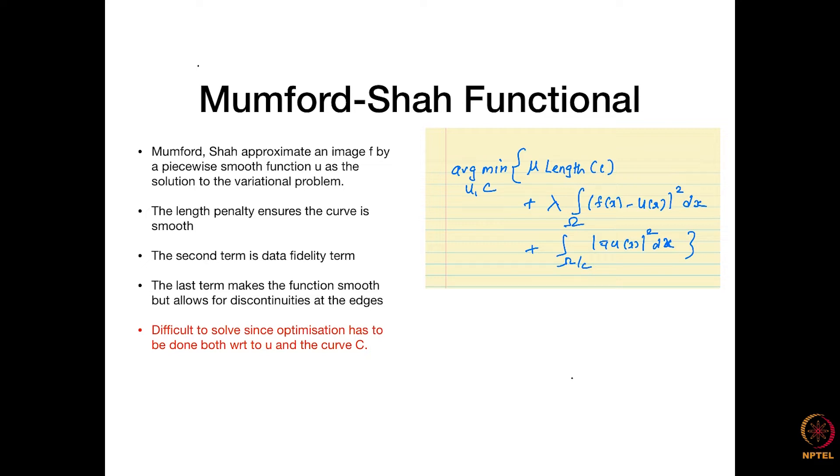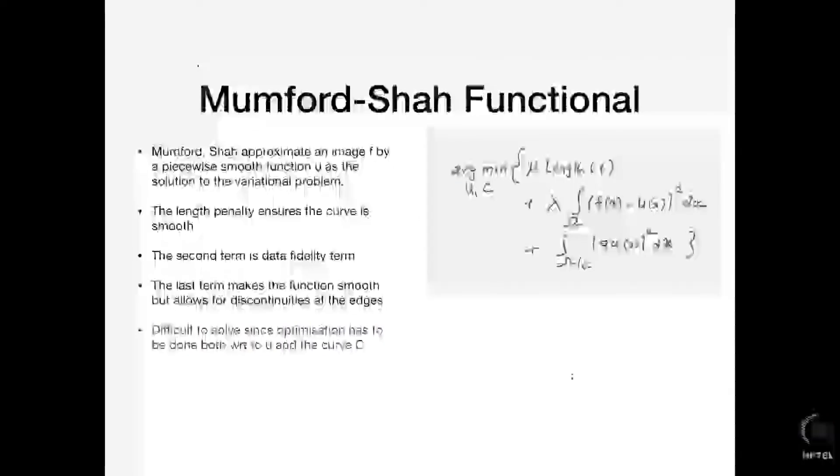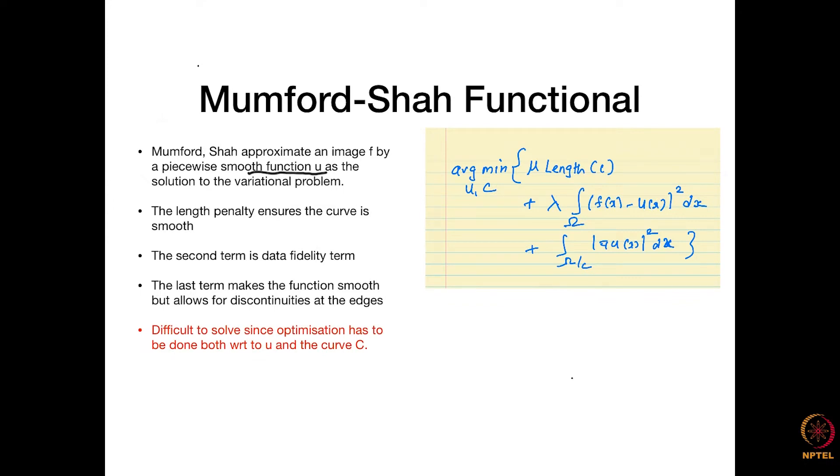These two scientists approximate an image f by a piecewise smooth function u as the solution to a variational problem. They want to estimate u from the following function shown on the right. There are three terms here. There is a length c, which is the curve; u is the approximation of the image. The image is given by f, that is your given image. You are approximating f with u, and you are also trying to figure out at the same time a contour c.